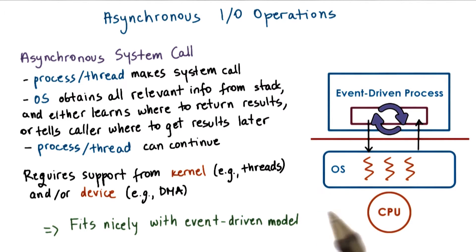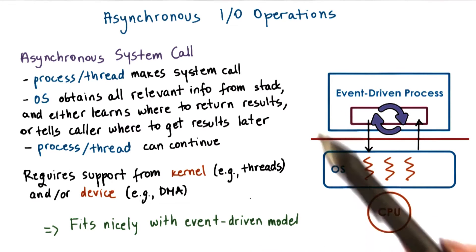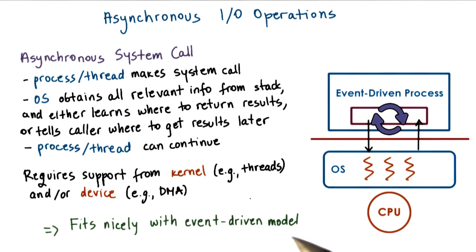In the event-driven model, if the handler initiates an asynchronous IO operation for network or for disk, the operating system can simply use a mechanism like select or poll or epoll that we mentioned before to catch such events. So in summary, asynchronous IO operations fit very nicely with the event-driven model.